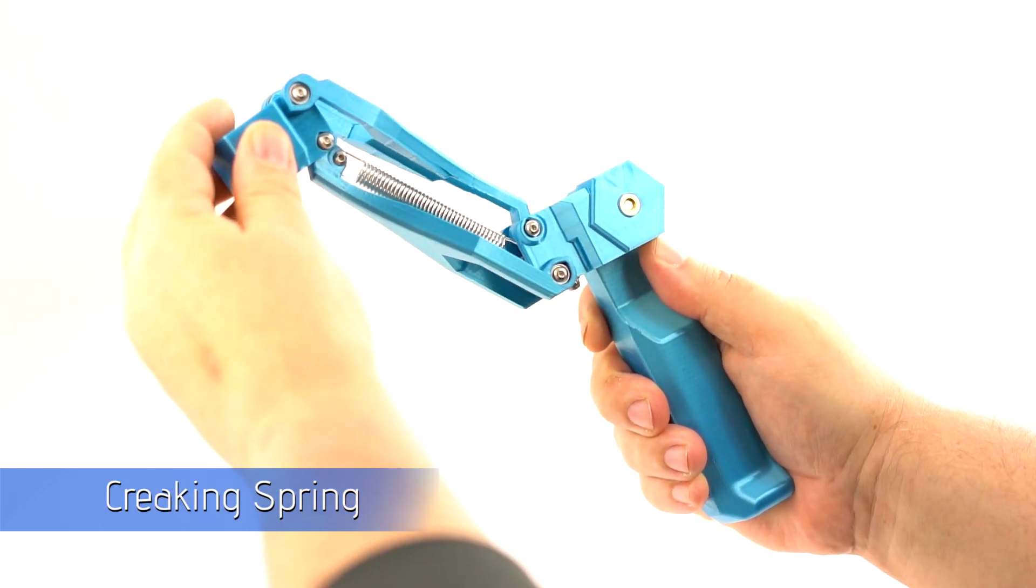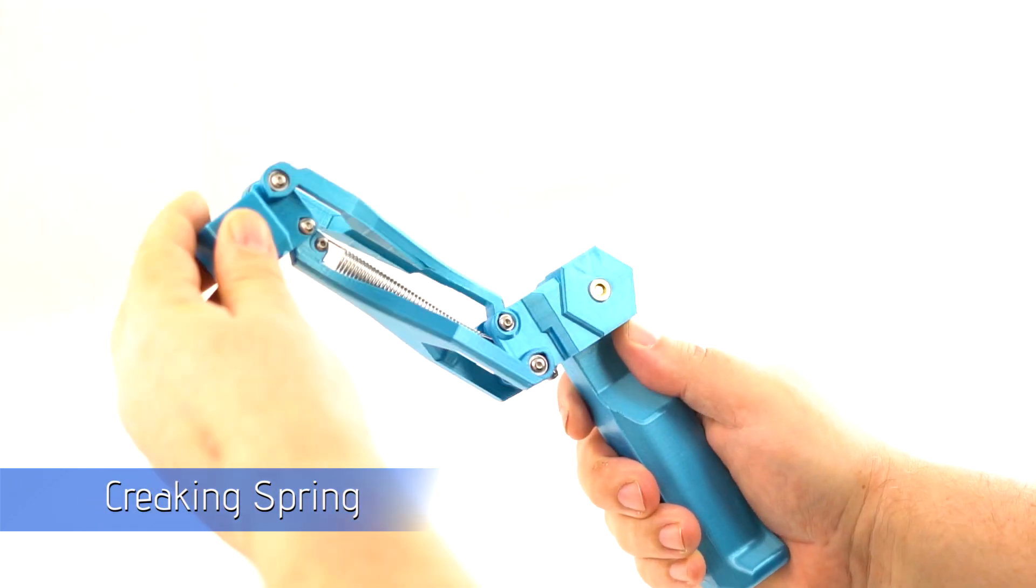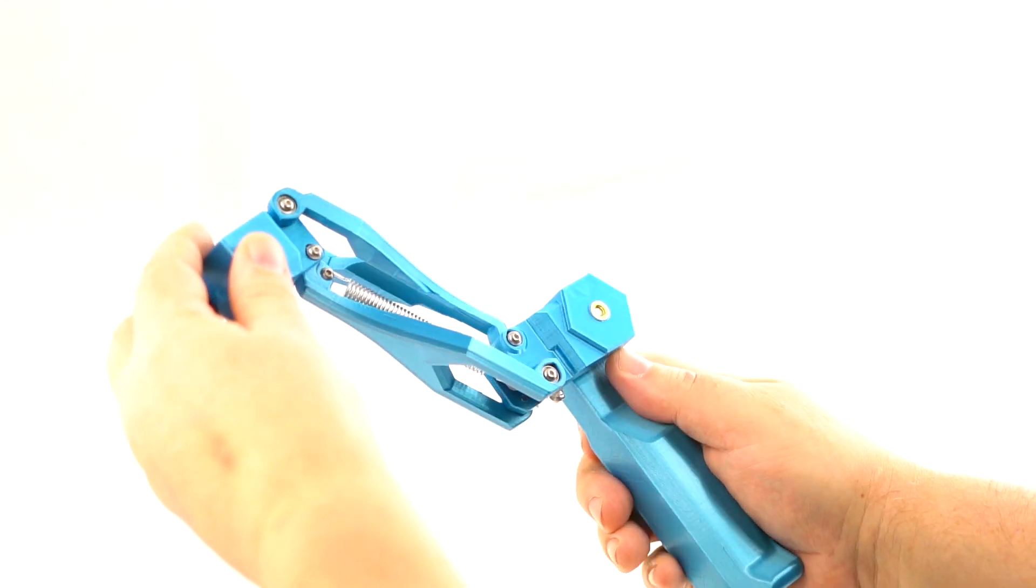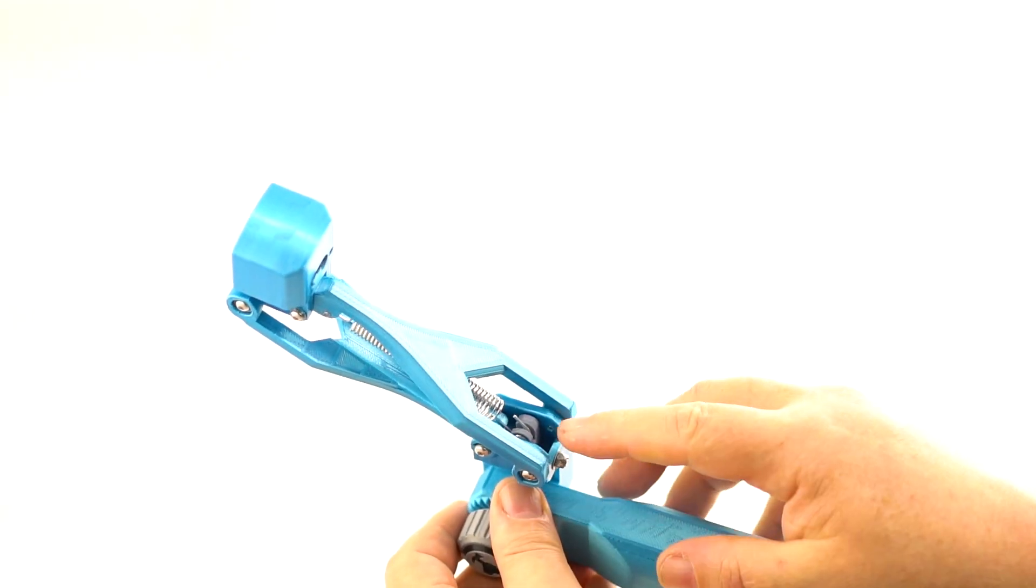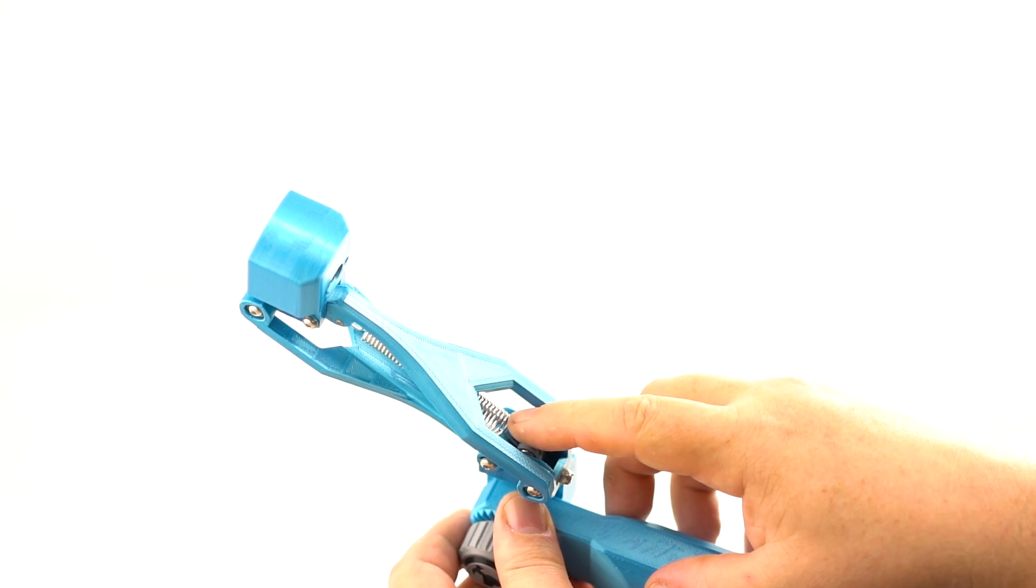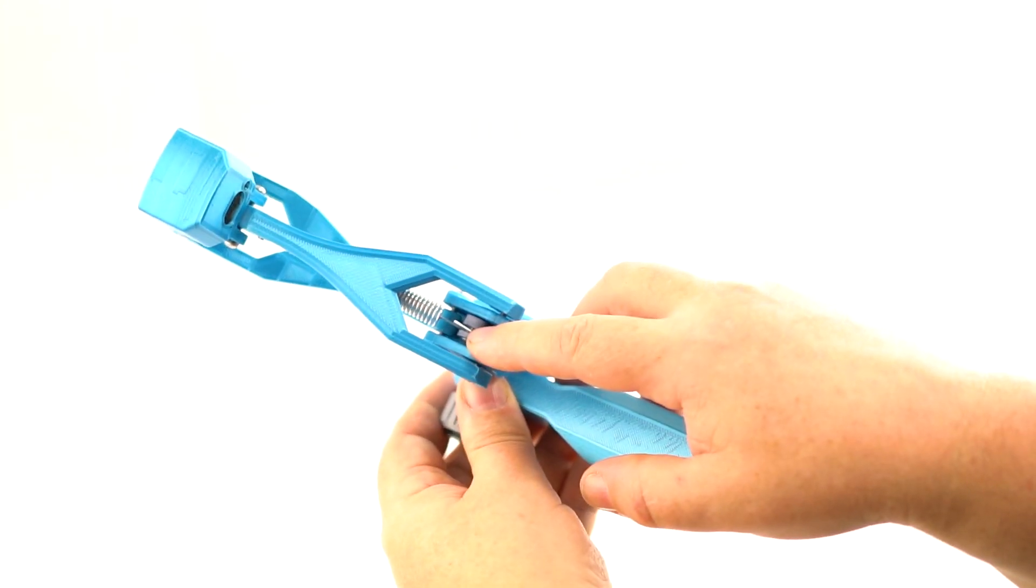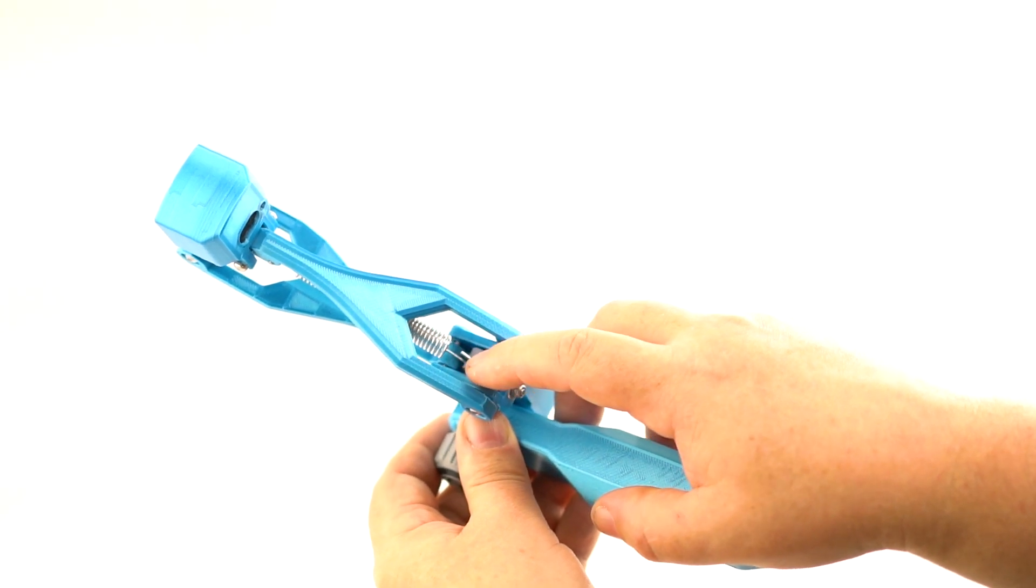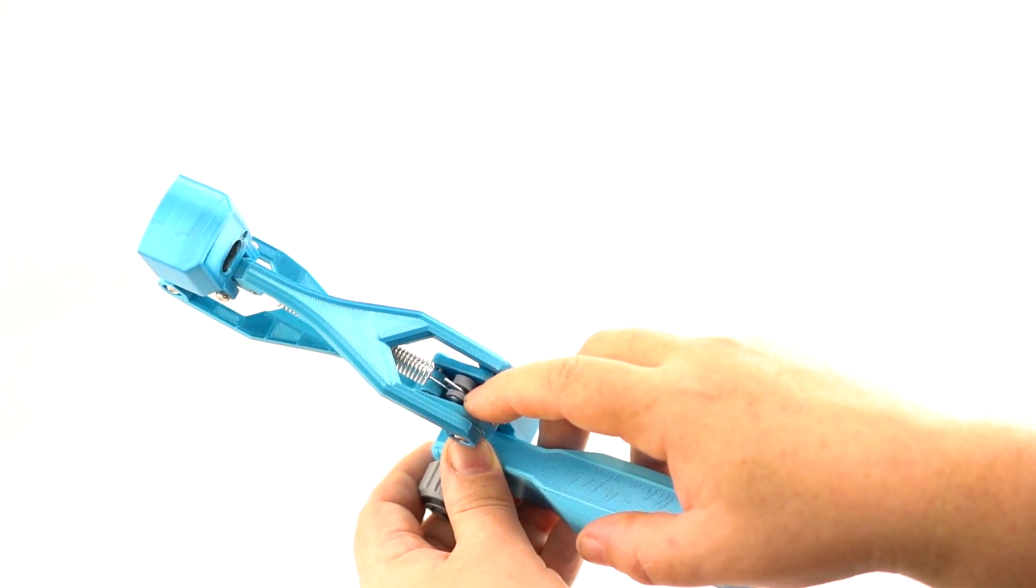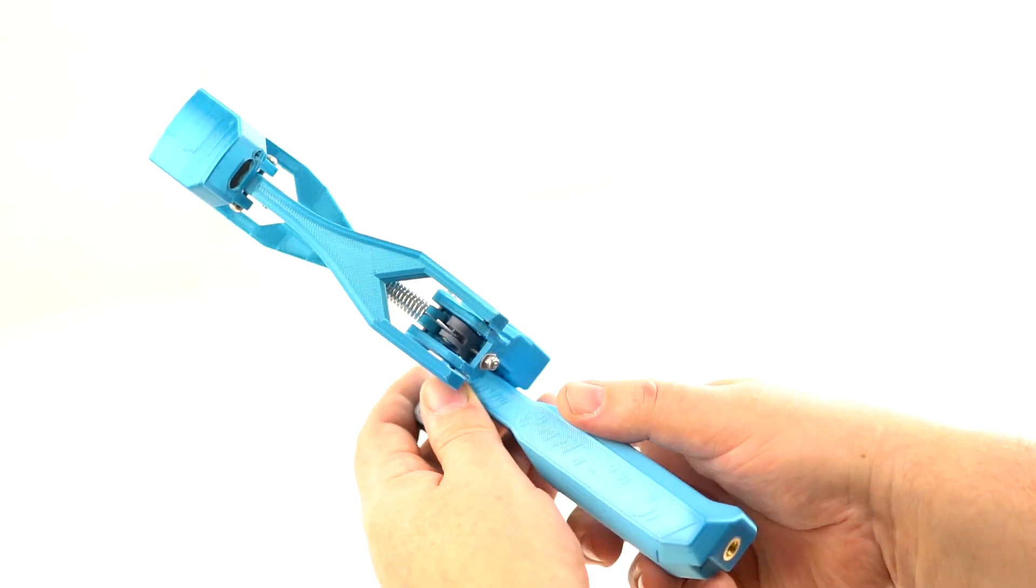So here's our creaking sound again. Now the reason for this creaking is where the loop or hook of the spring meets the screw. And that can be, sometimes there can be a little bit of rough texture on there that actually causes the creaking sound.